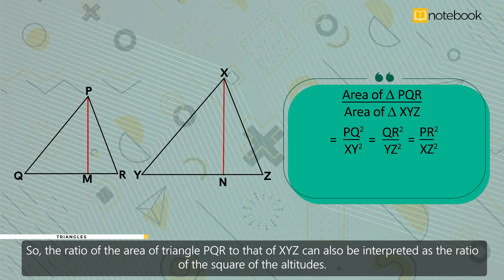So, the ratio of the area of triangle PQR to that of XYZ can also be interpreted as the ratio of the square of the altitudes.